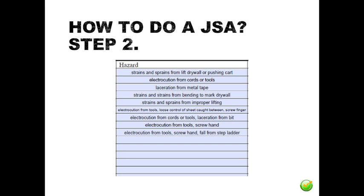In the example, we identify one or more hazards per step — a couple of words to describe the hazard is all that is needed. Some of the hazards identified are strains and sprains from lifting and moving drywall, and electrocution from cords and tools.